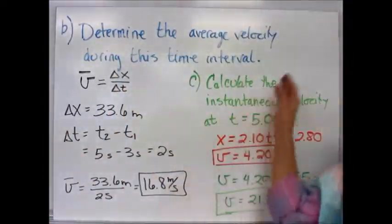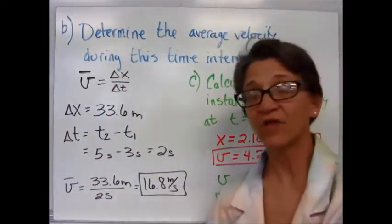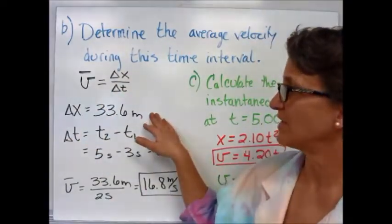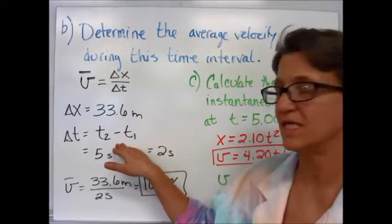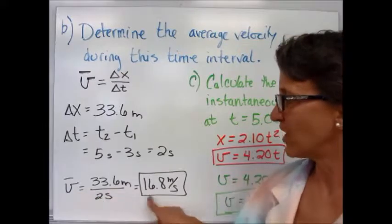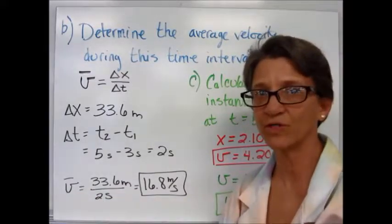Determine the average velocity during this time interval. Average velocity is your change of position over change in time. We find our Δx and divide it by Δt, which is 2 seconds in this example. Your average velocity is 16.8 meters per second.